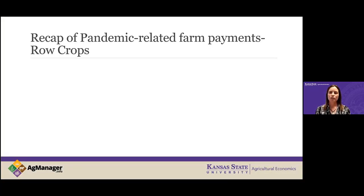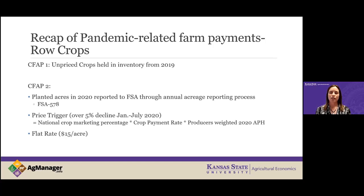Now let's dive into row crops. We know the payment amount, but how does that actually get applied? CFAP 1, announced last May, was paying based on unpriced inventory of row crops in storage on January 15th — that one's done and gone. What the top-up payment applies to is CFAP 2. In CFAP 2, you had planted acres in 2020 — which also included wheat planted in 2019 and harvested in 2020. The regular reporting process used your FSA 578 planted acres to make the CFAP 2 payment.